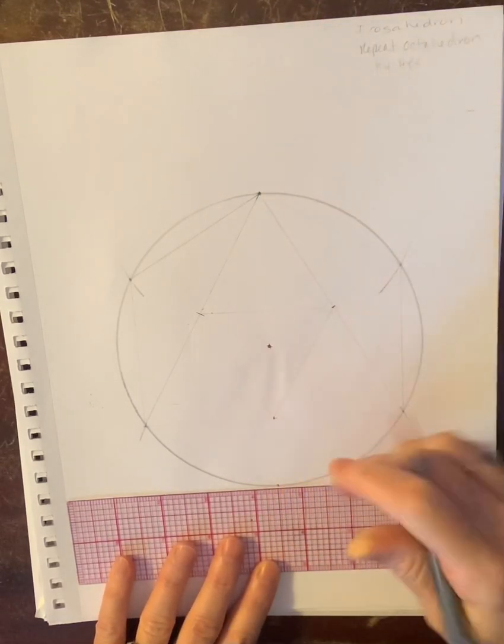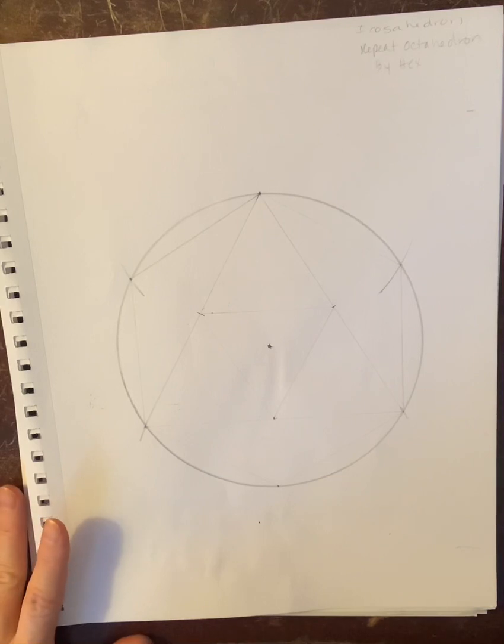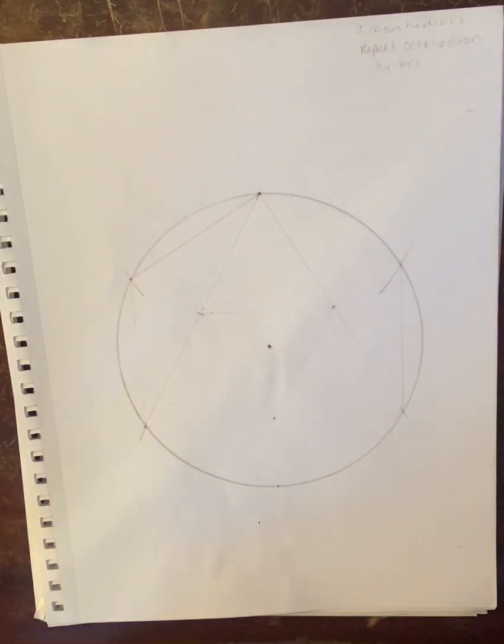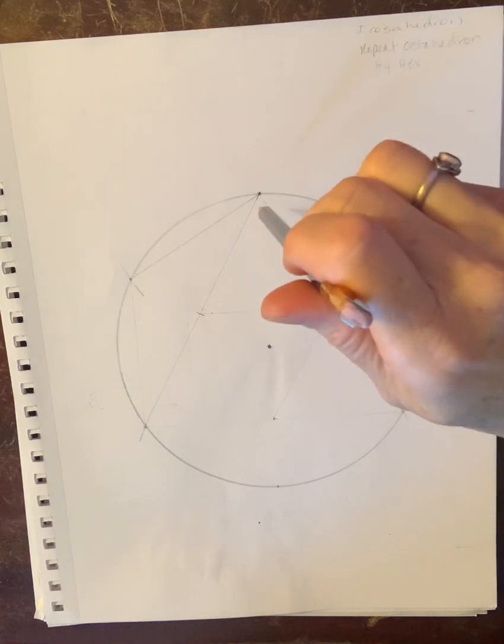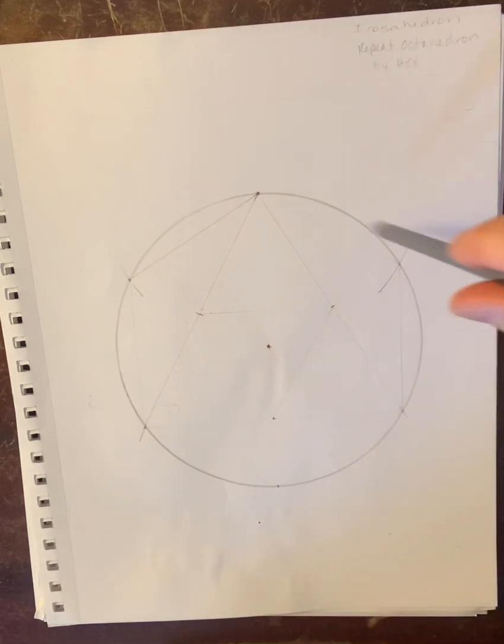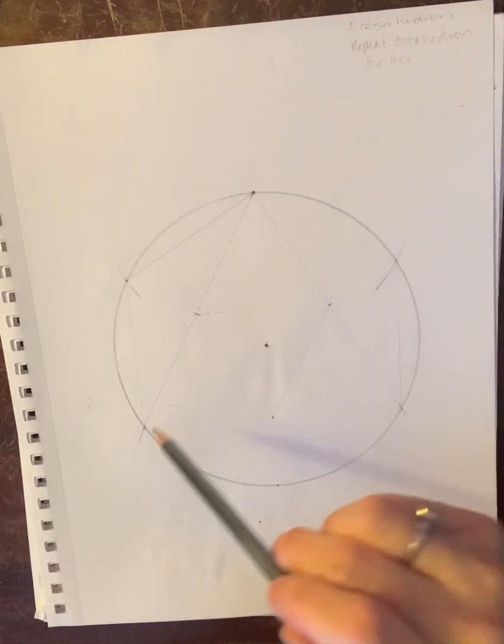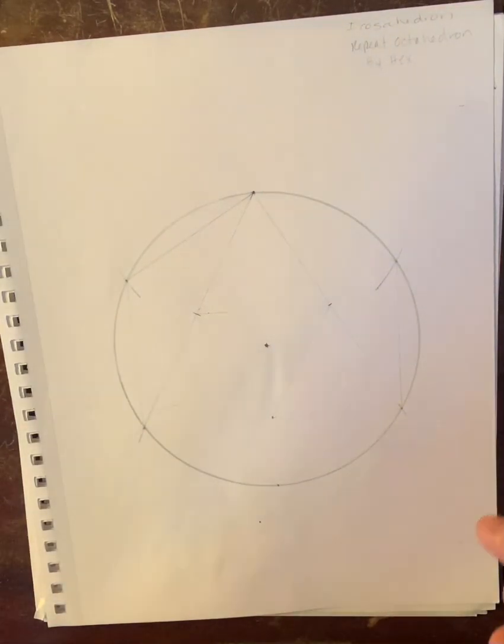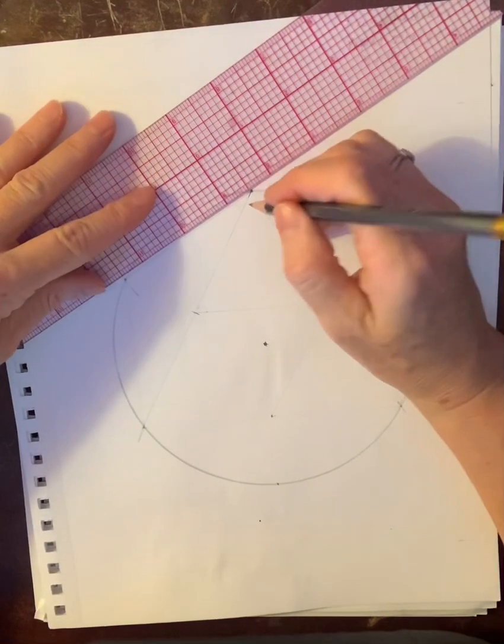Then we're going to do what we did with the octahedron. The icosahedron can come out of the octahedron, so you've got your hexagon that you're going to make, and then you're going to make your equilateral triangle. So let's make our hexagon.